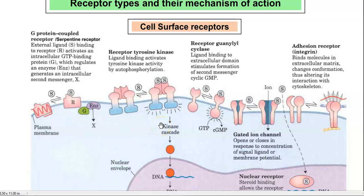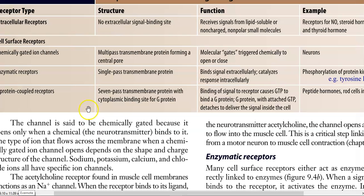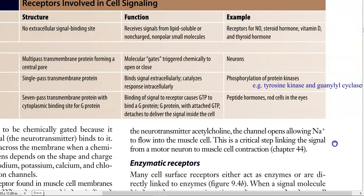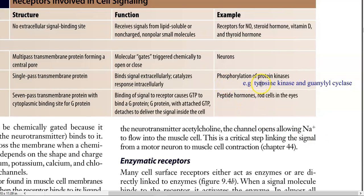The next receptor type is receptor tyrosine kinase, where ligand binding activates tyrosine kinase activity by autophosphorylation. The next is receptor guanylyl cyclase, where ligand binding to the extracellular domain stimulates formation of second messengers including cyclic GMP. For both these enzymatic receptors, it is a single-pass transmembrane protein that binds signal externally and catalyzes responses internally. The mechanism of action is by phosphorylation and dephosphorylation of protein kinases.